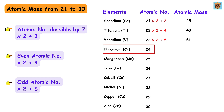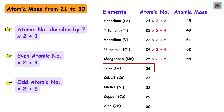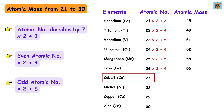Chromium has atomic number 24, which is even, so 24 times 2 is 48 plus 4, giving us 52. Manganese has atomic number 25, which is odd, so 25 times 2 is 50 plus 5, giving us 55. Iron has atomic number 26, which is even, so 26 times 2 is 52 plus 4, giving us 56. Cobalt has atomic number 27, which is odd, so 27 times 2 is 54 plus 5, giving us 59.